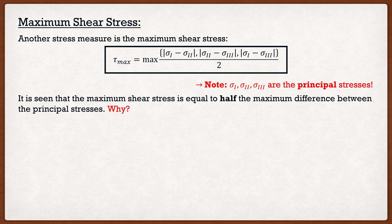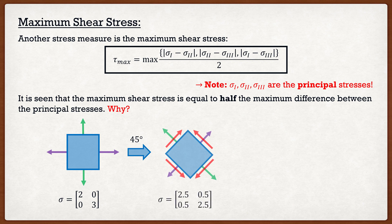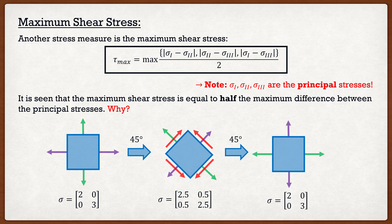For the principal stresses, we find the difference between all three of them, divide by 2, and whichever is maximum is our maximum shear stress. To understand why: if I have the principal stresses, I can rotate my state of stress to obtain different states of stress — it's just a transformation. If I rotate by 45 degrees, my stress tensor develops shear stresses. Rotating 45 more degrees brings me back in line with the original eigenvalues, and there's no more shear. So shear stresses occur between 0 and 90 degrees, and in particular at 45 degrees.